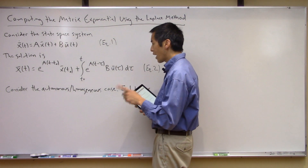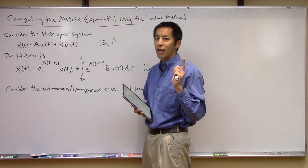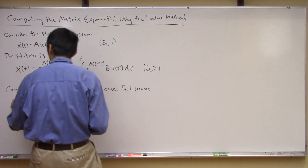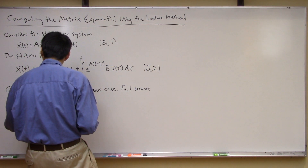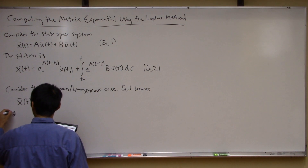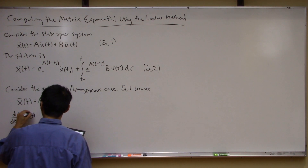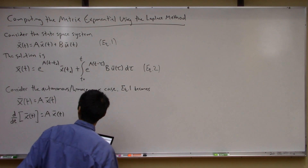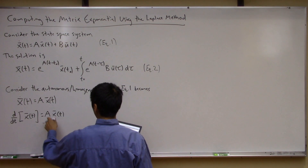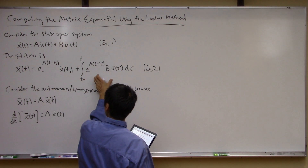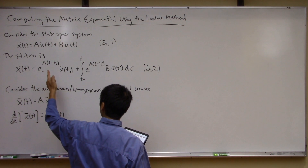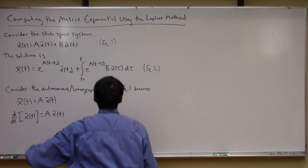What I want to talk about today is the autonomous or homogeneous case. What if u equals zero — you have no external inputs? In that case your state-space representation becomes really simple: you lose the Bu part and you just have x-dot equals Ax. We can also write this as d/dt of the vector x equals Ax. For simplicity, let's consider the initial time t₀ to be zero.